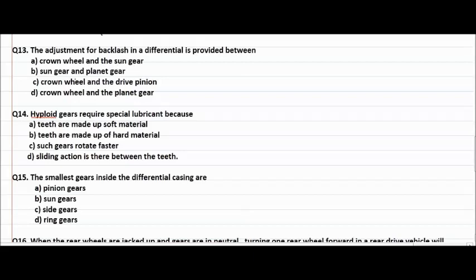The adjustment for backlash in a differential is provided between crown wheel and the sun gear, sun and the planet gear, crown wheel and drive pinion. Crown wheel and sun gear is not the answer, sun gear and planet gear no, crown wheel and drive pinion no. Crown wheel and planet gear is the right answer for this.